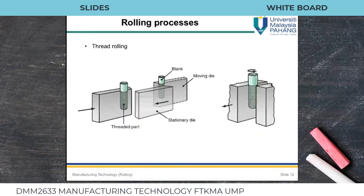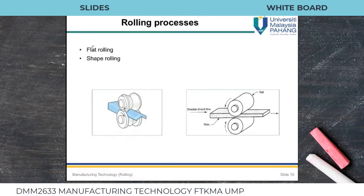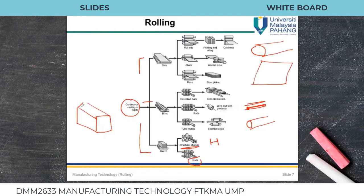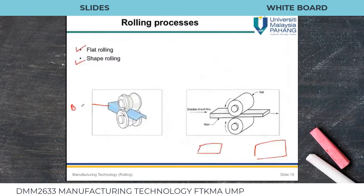There are different types of rolling processes. Number one is flat rolling — in flat rolling both the inlet and outlet sheet are flat. Number two is shape rolling — in shape rolling we take a bloom and transform it into a specific shape, such as an I-section or rail profile.